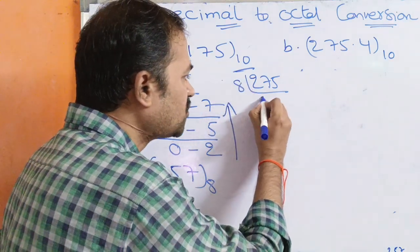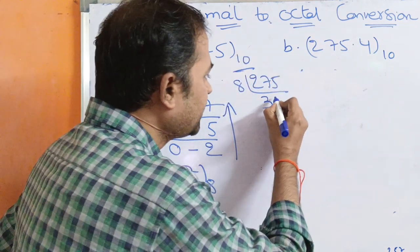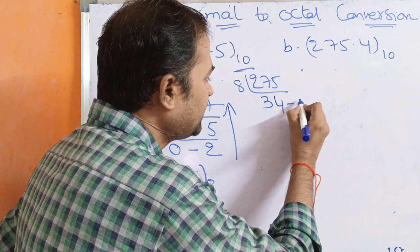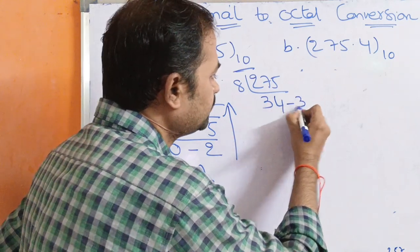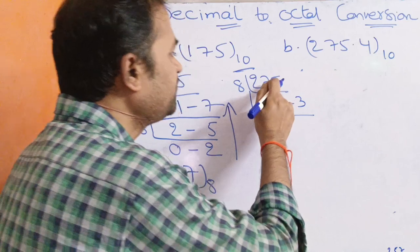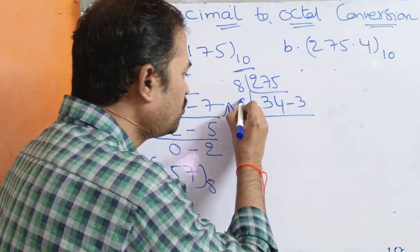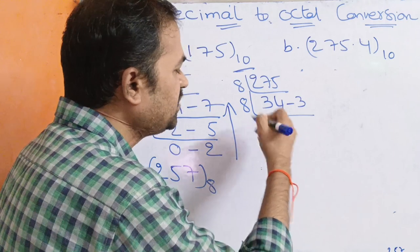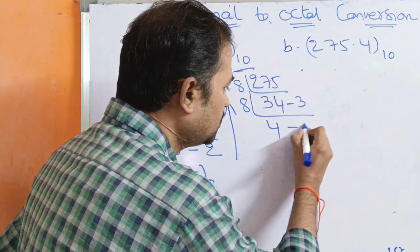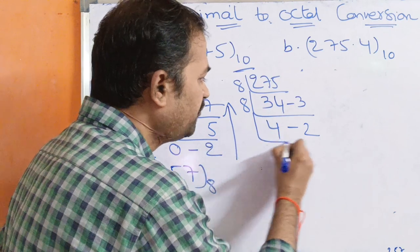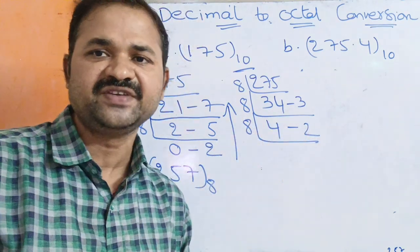Dividing 275 by 8: 8 threes are 24, so we get quotient 34 and remainder 3. Then 34 divided by 8: 8 fours are 32, so 34 minus 32 equals 2, giving quotient 4 and remainder 2. Once again perform the division operation with 8.